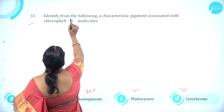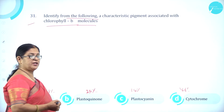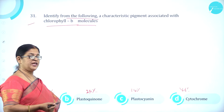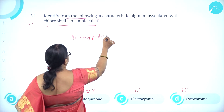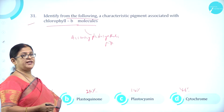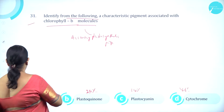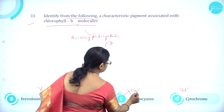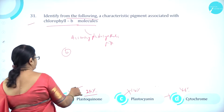Moving on to question number 31. Identify the characteristic pigment associated with chlorophyll B molecules. During photosynthesis, chlorophyll A is the main photosynthetic pigment, while chlorophyll A and B are accessory photosynthetic pigments. The characteristic pigment associated with chlorophyll B molecules is plastoquinone. So option B plastoquinone is correct.